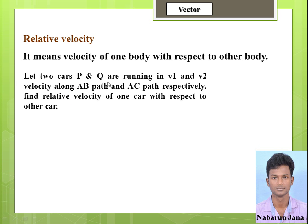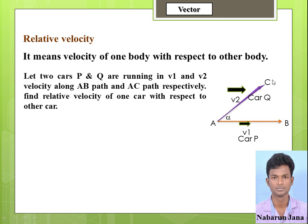Let two cars P and Q be running at V1 and V2 velocity along AB path and AC path respectively. This is AB path and this is AC path. Car P is running at V1 meters per second along AB path and car Q is running at V2 velocity along AC path, and the angle between them is alpha. Find the relative velocity of one car with respect to the other car.